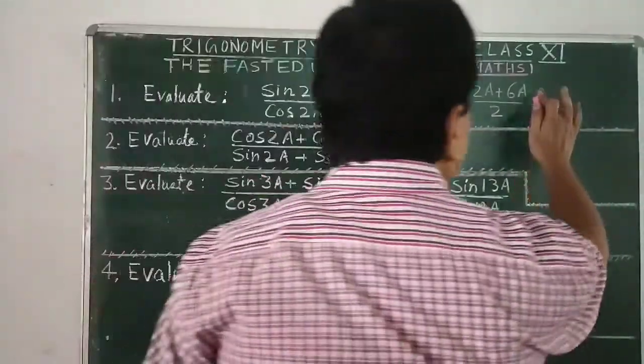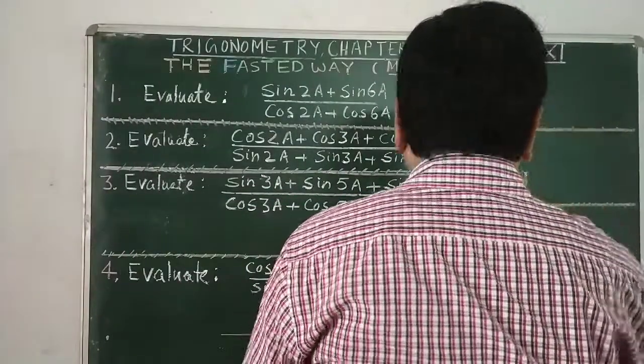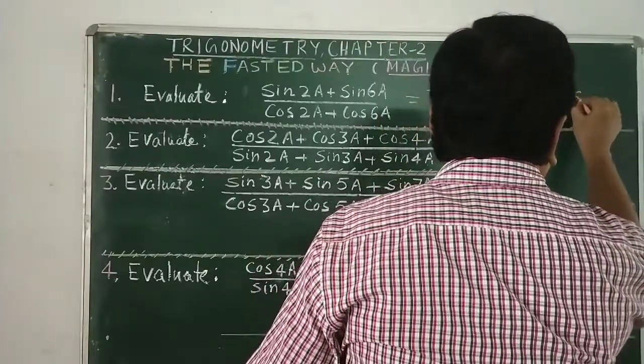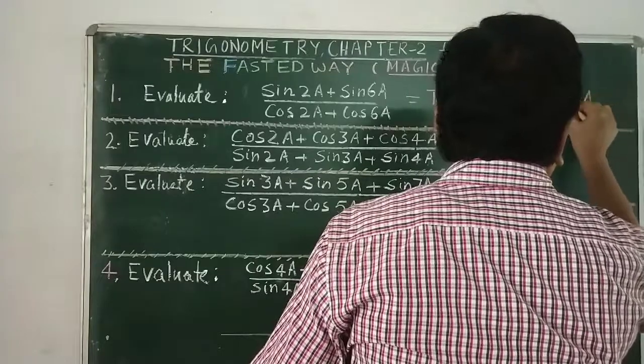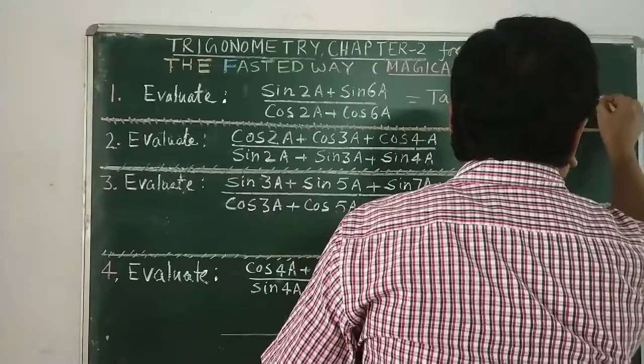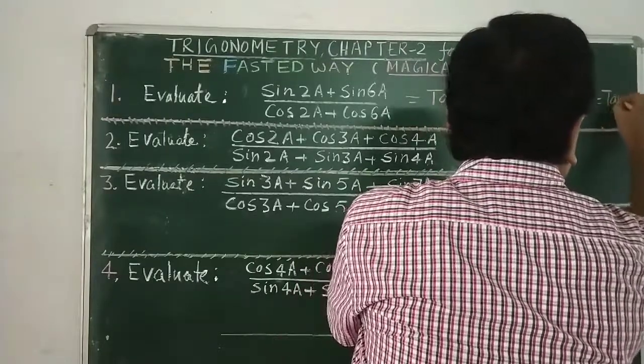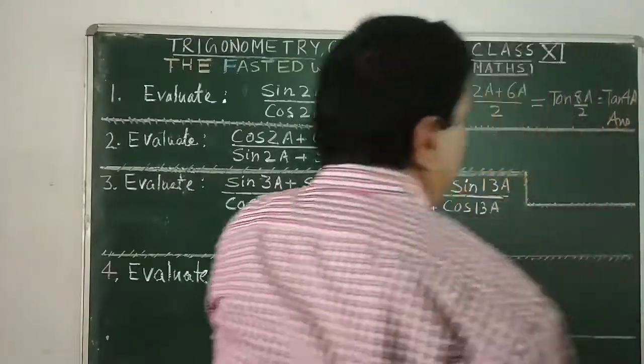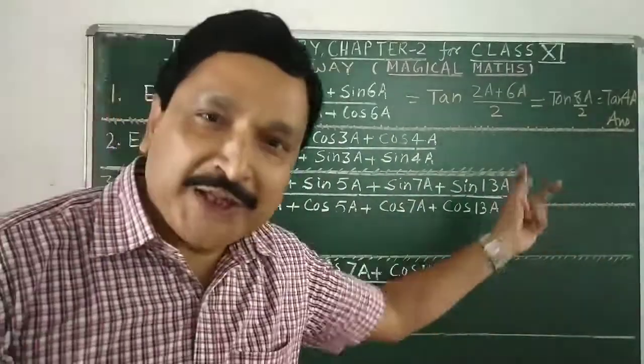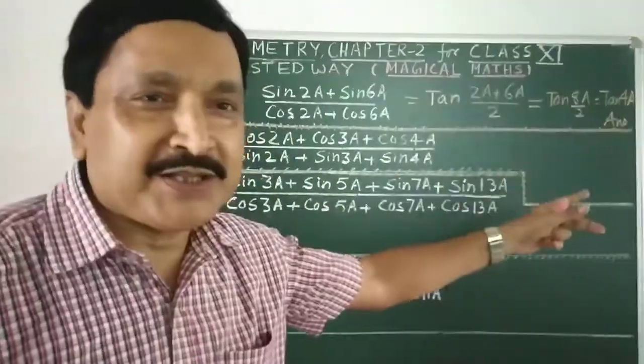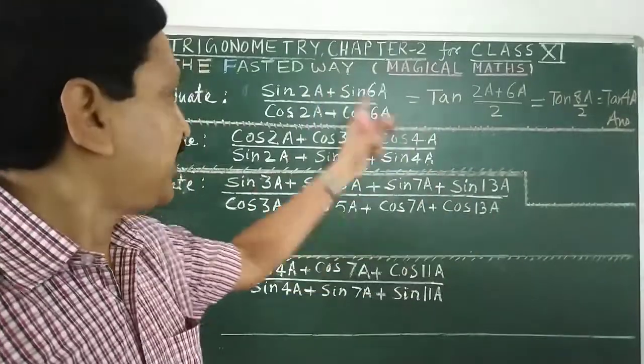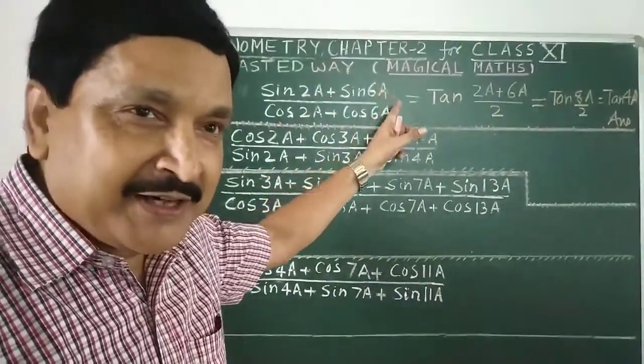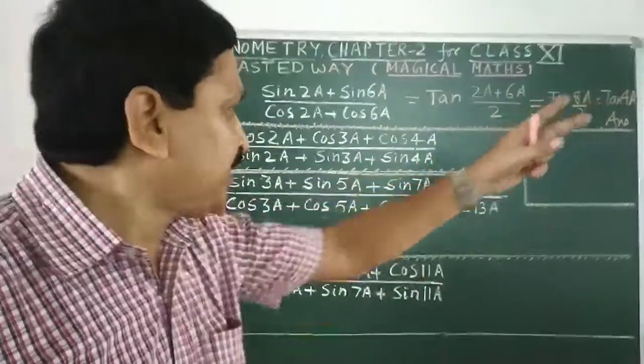The answer is over. So write tan 4A. So this is tan 8A by 2. So finally tan 4A over here. The answer is over. You can only do this. No need to write all these steps. Simply sin by cos it's tan. And the average of 2A and 6A, is 8A, 8A by 2 is 4A. So tan 4A is answer.